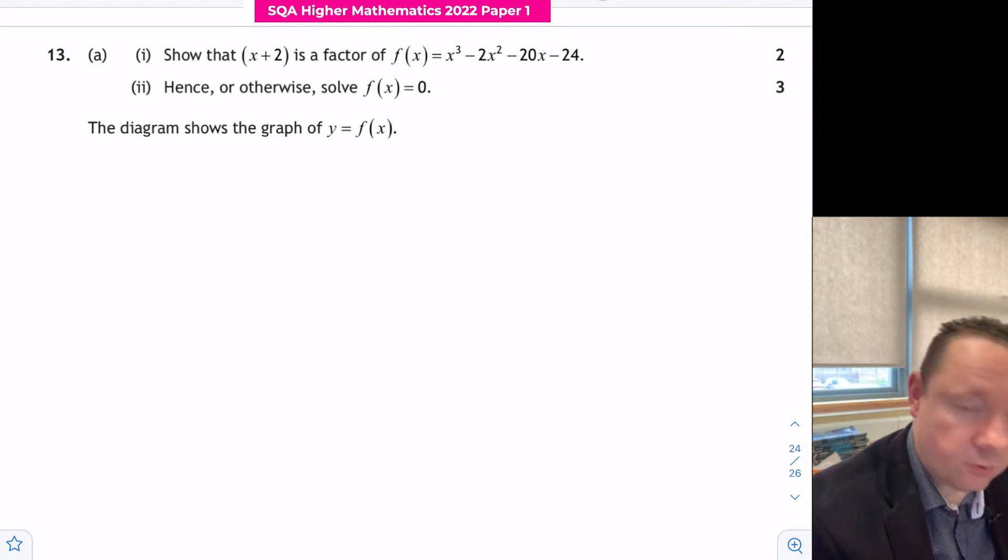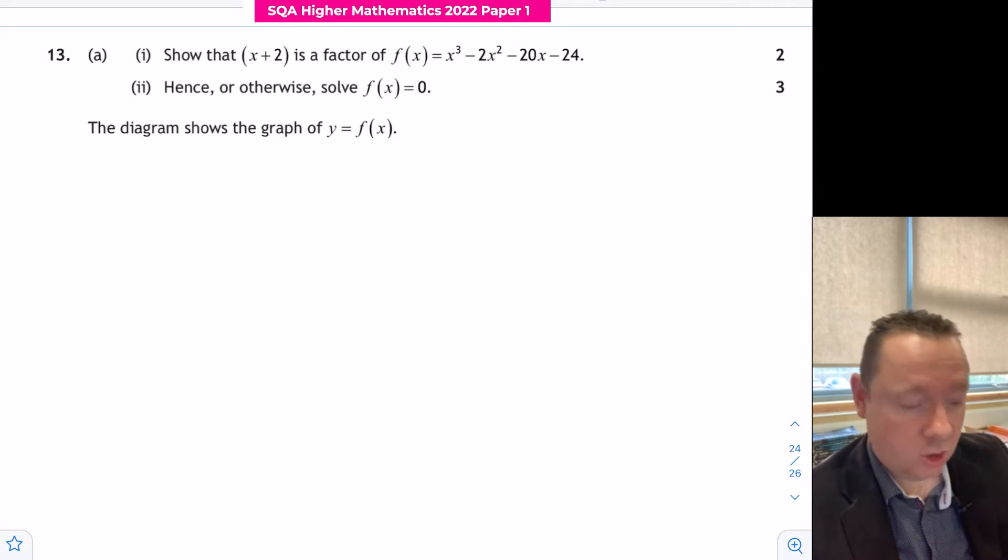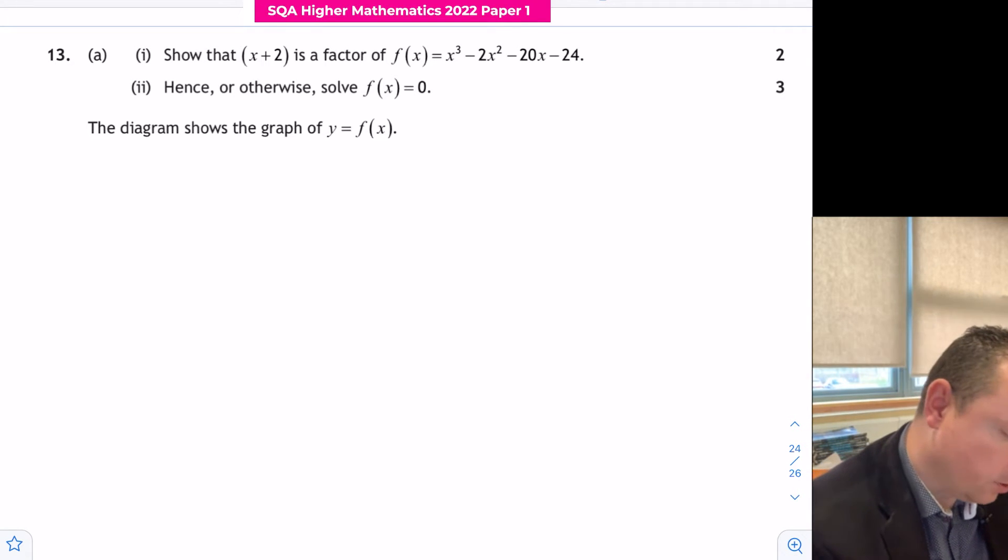So x plus 2 is a factor. There's two ways to do this: we can substitute minus 2 into it or use synthetic division with minus 2. I will do the most common way, which is synthetic division. As a reminder of how that works, we put minus 2 on the outside.